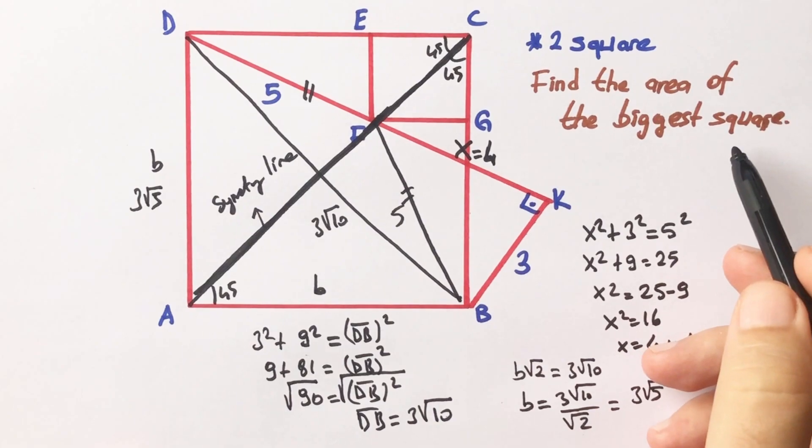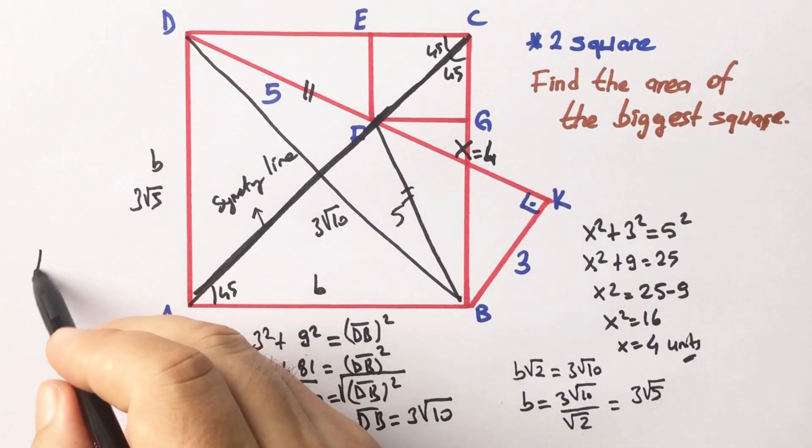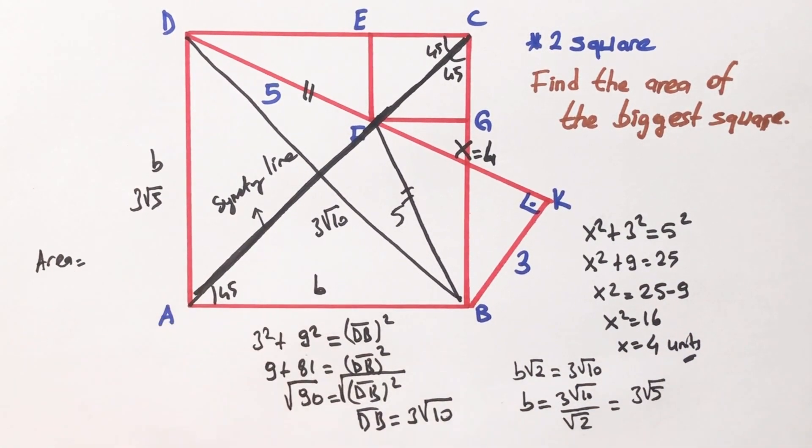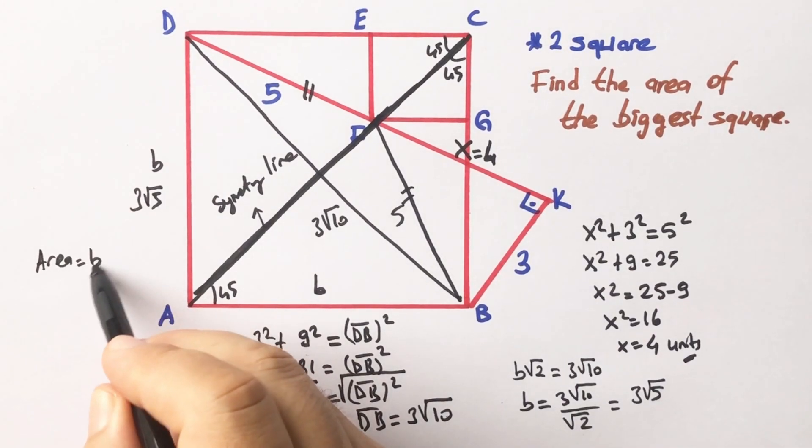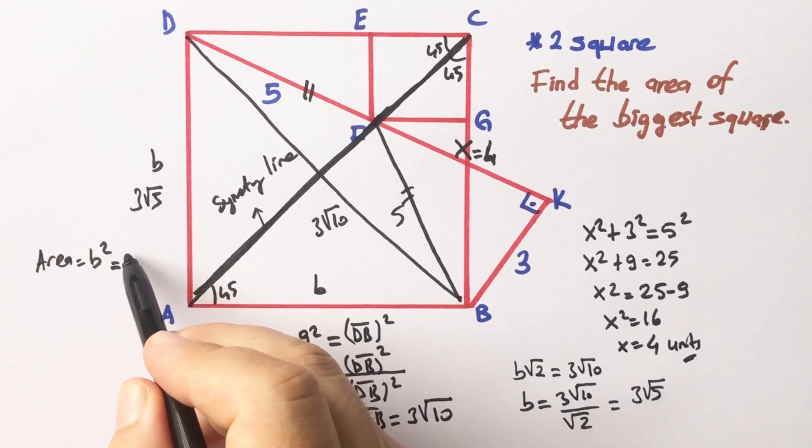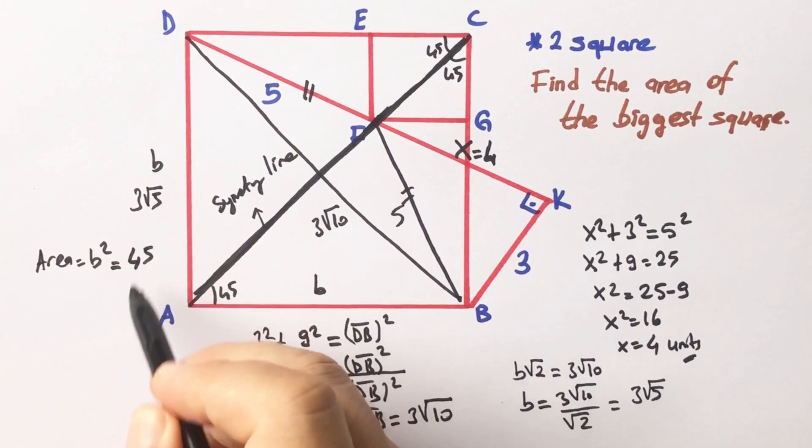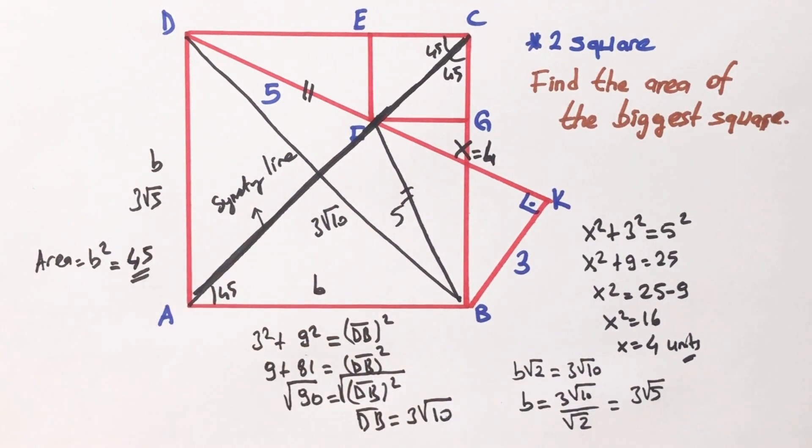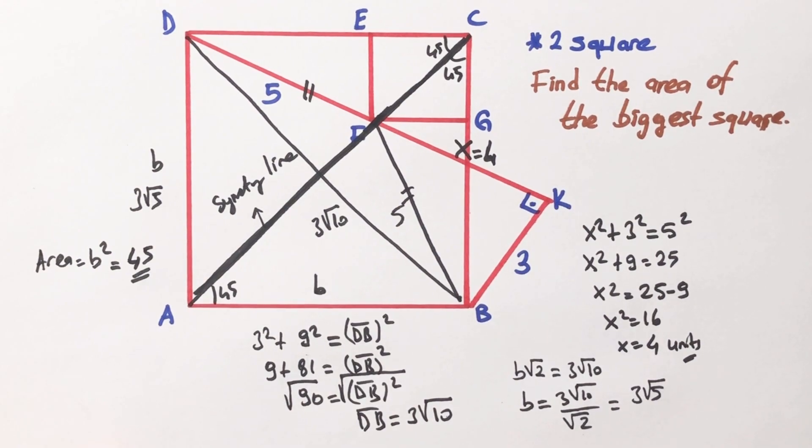Okay, now we can calculate easily the biggest square, right? So the area equals B squared. Therefore the area equals 45 unit square.